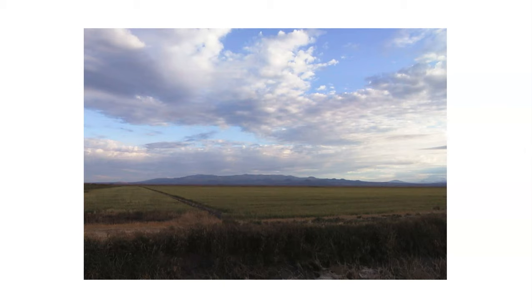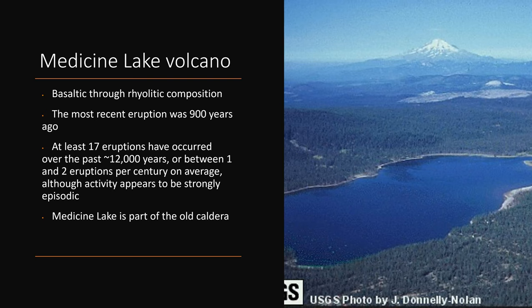Medicine Lake volcano shows basaltic through rhyolitic compositions — both basalt and rhyolite come out of this volcano, mostly from those individual magma chambers. The most recent eruption was about 900 years ago, and there have been at least 17 eruptions over the last 12,000 years — on average one to two eruptions per century. The eruptions tend to be very episodic and somewhat unpredictable. It is part of an old caldera that used to be in the area.